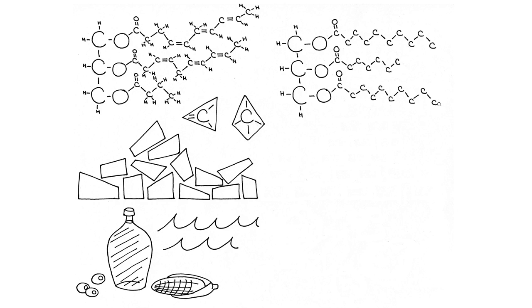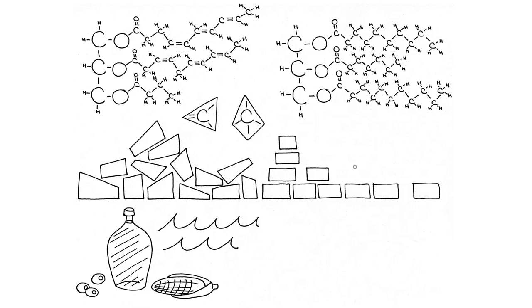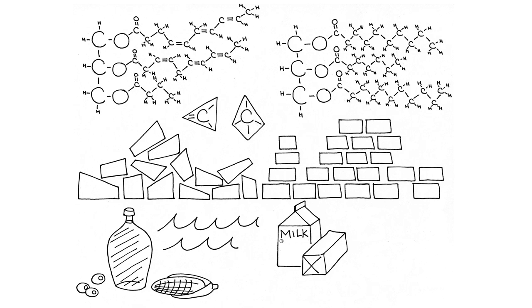On the other hand, saturated fat, which doesn't have those kinks, can pack itself very neatly and saturated fat gets to be solid at room temperature, like butter, which is made from milk, or like the little squishy fat chunks in a steak, or like other animal fats.